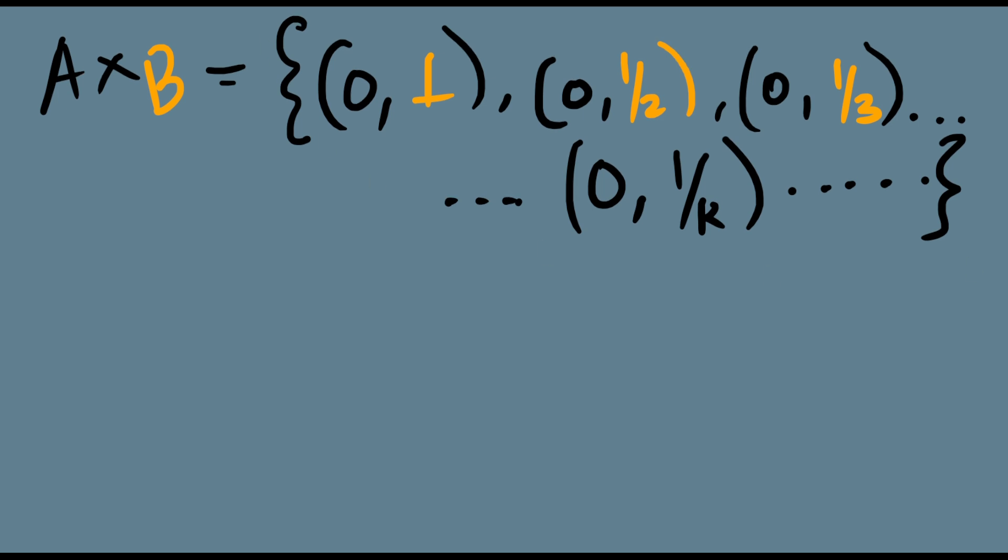And this is a good exercise for you to see what elements belong to A cross B and what do not. So given any element, if A cross B is well defined, I should be able to prove whether it belongs to A cross B or not. Say (0, 1/95), does it belong to A cross B? It does because 1/95 is of the form 1/n. So it does belong to A cross B.